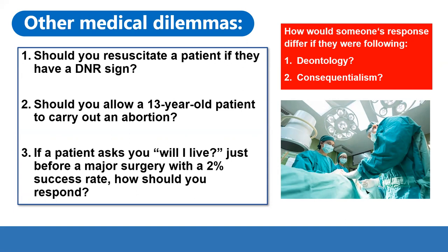Moving on to the second example: should you allow a 13-year-old patient to carry out an abortion? If you were following deontology, hopefully you would come up with the idea that killing is inherently wrong. Many people class abortion as killing or harming a life, and therefore, according to deontology, that would be inherently wrong.